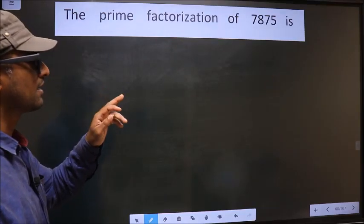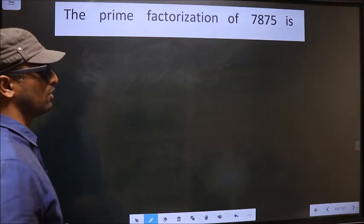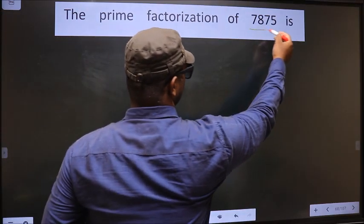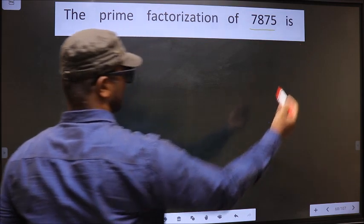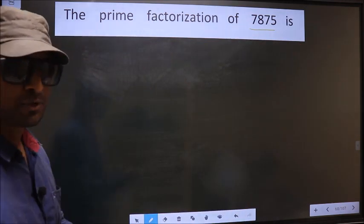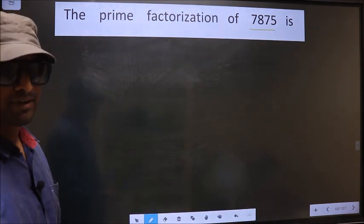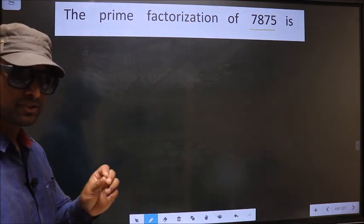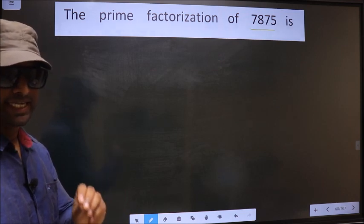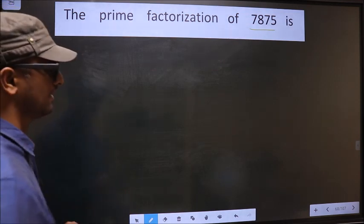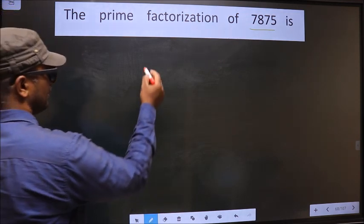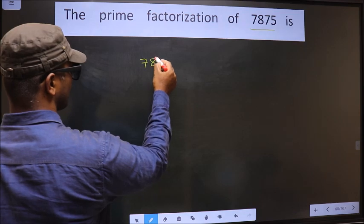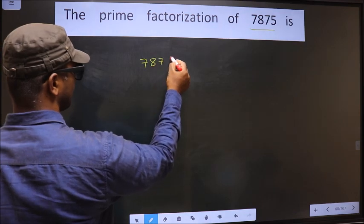The prime factorization of 7875. To do the prime factorization, first we should frame it in this way — that is 7875.